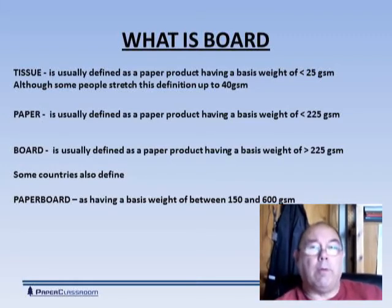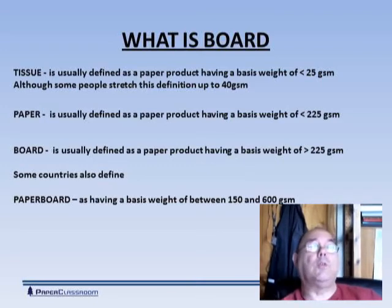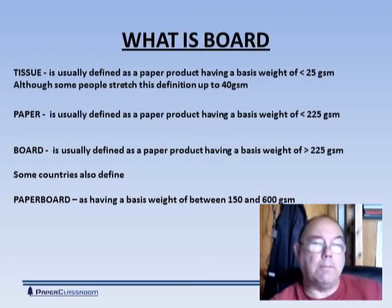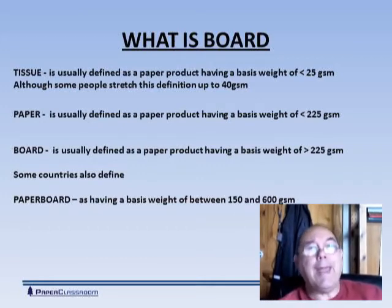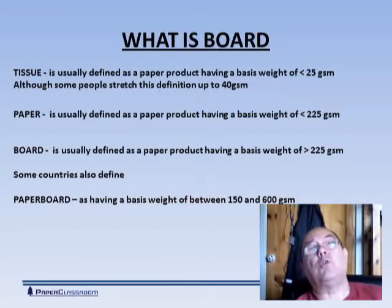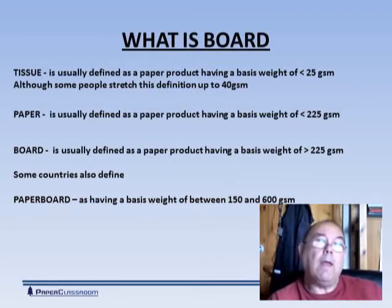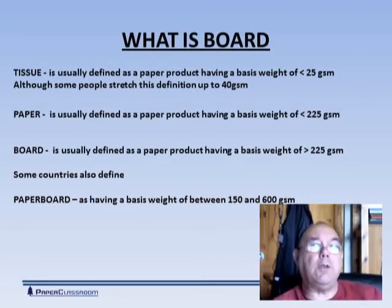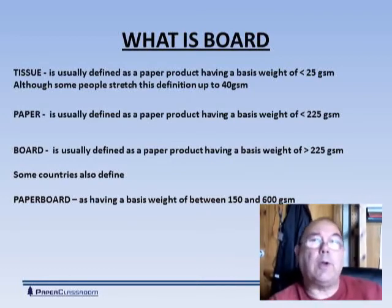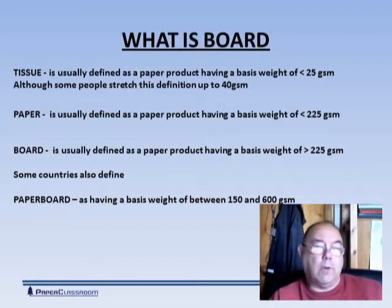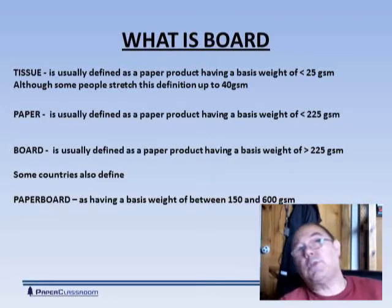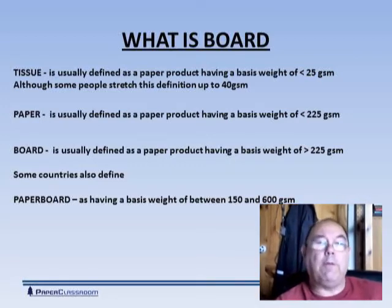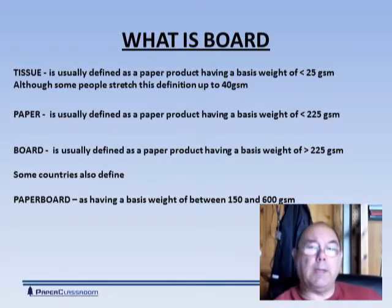Paper is anywhere above that up to about 225 grams per square meter, and the general definition for board is anything larger than 225 grams per square meter. That's how we define it in the UK. In other countries there's another grade called paperboard, having a basis weight between 150 and 600 grams per square meter.